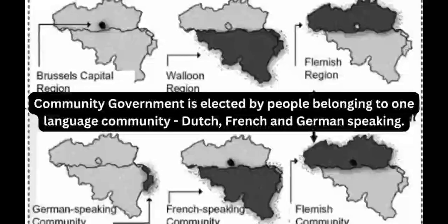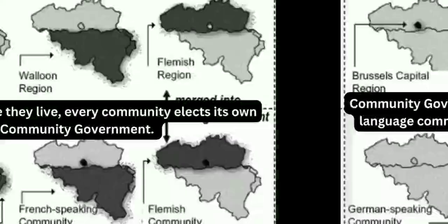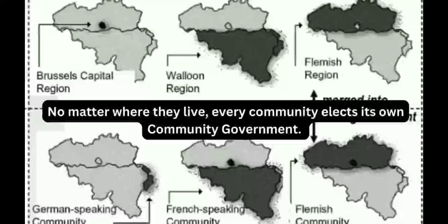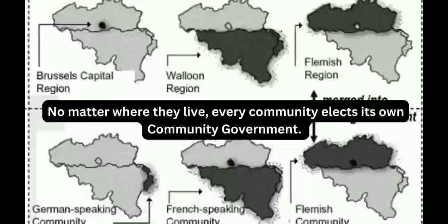Community government is elected by people belonging to one language community, namely Dutch, French, and German-speaking communities. No matter where they live, every community elects its own community government in Belgium. For example, the Dutch-speaking community will elect its Dutch community government and the French community will elect its French community government.